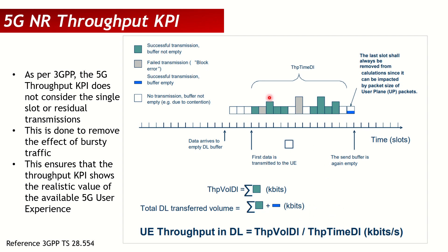If there are many retransmissions, they are not added to throughput volume DL but they are still counted in throughput time DL, so throughput decreases. Similarly, if there are many empty slots in between, throughput time DL increases without increasing throughput volume DL, also reducing throughput. This is how the KPI works per 3GPP, and most vendors use the same concept.